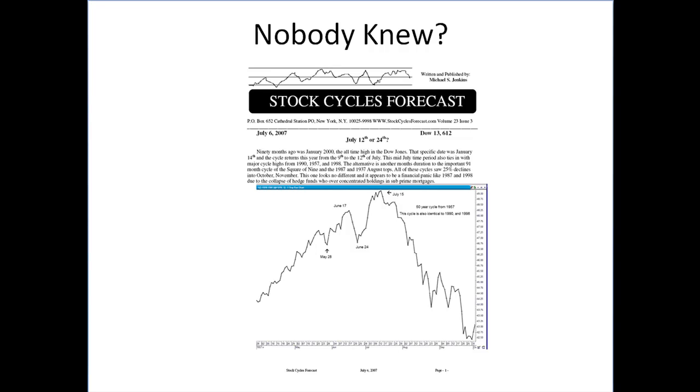This is an actual picture of my newsletter from July 6, 2007, and three weeks later I was predicting a top to the market in 2007. The actual top is saying as late as the 24th. It was actually the 22nd. I was looking for at least a 25% decline, and I said it would be a panic like 1987 or 1998 due to the collapse of hedge funds who over-concentrated holding in subprime mortgages. This is exactly what happened. As the market plunged in 2007 into mid-August, the Federal Reserve intervened aggressively with interest rates and caused a second rally to bring the market back into September and October.